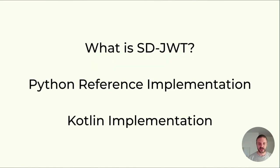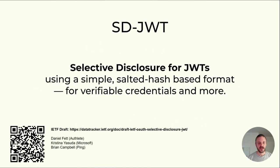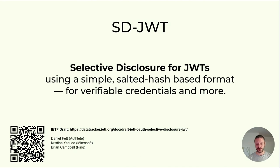In this talk I would like to talk about SD-JWT itself. I'll give you a brief introduction if you're not familiar with SD-JWT, and then I'm going to talk about the reference implementation that we as the specification authors and editors created for the SD-JWT specification, as well as a Kotlin implementation that was created independently. What is SD-JWT? Well, the SD stands for selective disclosure. SD-JWT enables selective disclosure for JWTs and is based on a very simple approach. We say simple is a feature for SD-JWT, and this approach is based on a concept called salted hashes.